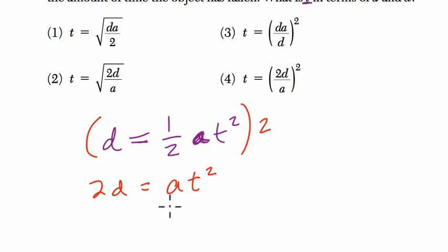Now, get rid of the a by dividing both sides by a, and 2d divided by a equals t squared.